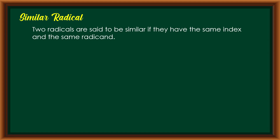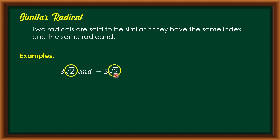While dealing with addition and subtraction of radical expressions, we will also deal with similar radicals. Two radicals are said to be similar if they have the same index and the same radicand. For example, 3√2 and -5√2 are similar radicals since they have the same index of 2 and the same radicand of 2. Another example: y·∛(x²y) and 5y·∛(x²y) both have index 3 and radicand x²y, so they are similar radicals.